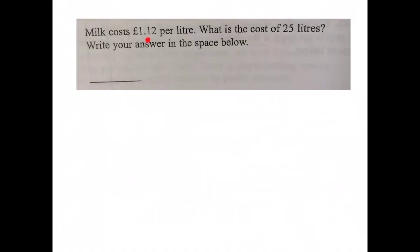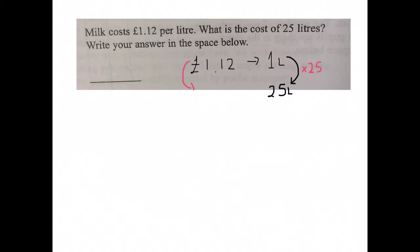Milk costs £1.12 per litre. What is the cost of 25 litres? Write your answer in the space below. We are initially told that for £1.12 we can get one litre of milk, but we need to work out the cost of 25 litres. I have multiplied it by 25, so I must do the same to my price — I must multiply £1.12 by 25 to get the cost of 25 litres.